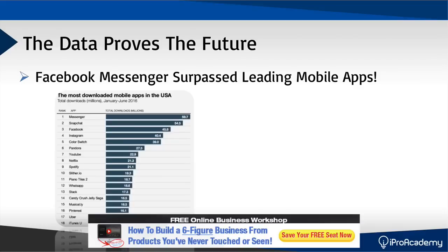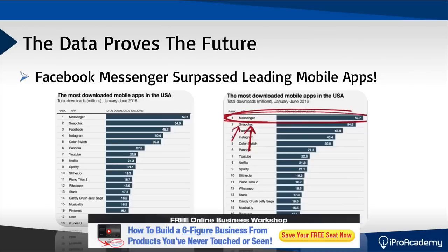So take a look at this. This is the total downloads in millions from January to June 2016. We all know how big Snapchat is, how many people use Uber, and how many people use WhatsApp. But here's the crazy part: in just a six-month period, Messenger is actually the number one most downloaded app in the United States — 59 million downloads in six months. Messenger is now being introduced as one of the most important apps in our lives.